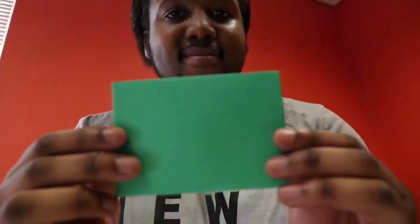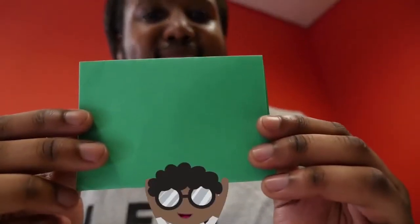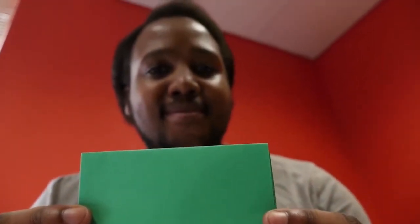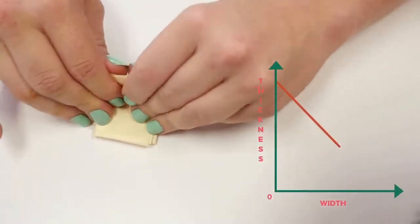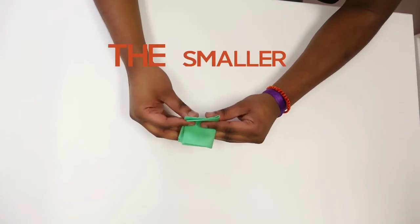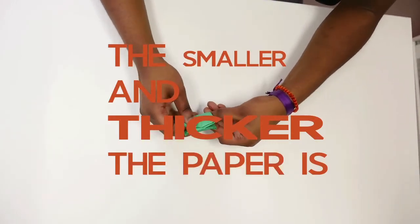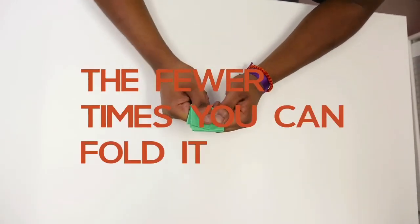The limitation on paper folding has a mathematical reasoning. The thickness of the paper layers grows exponentially and the width of the paper decreases with each fold. So, the smaller and thicker the paper is, the fewer times you can fold it in half.